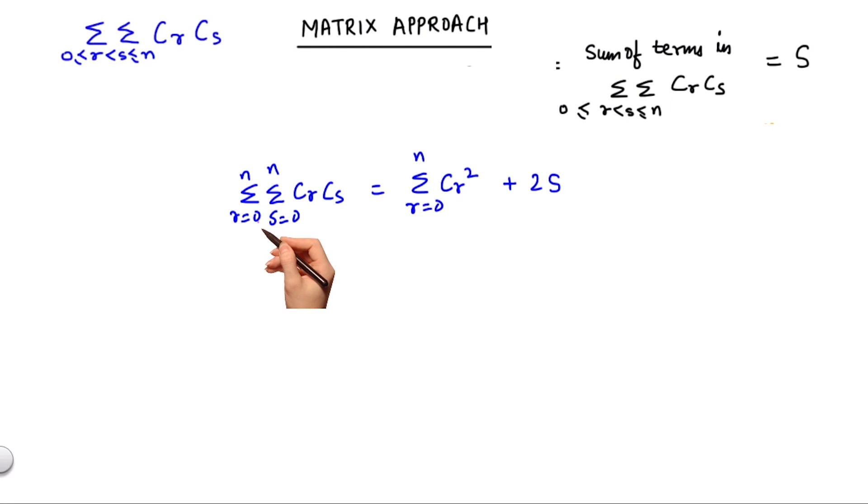We have already solved for this double summation and know that this equals 2 to the power 2n, and this summation equals 2n Cn.